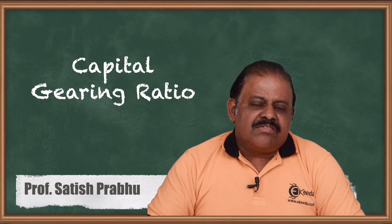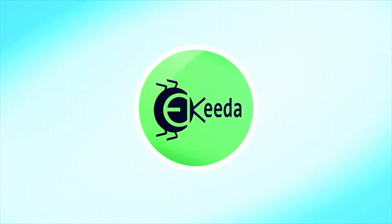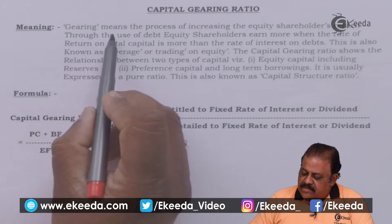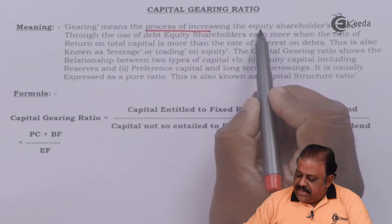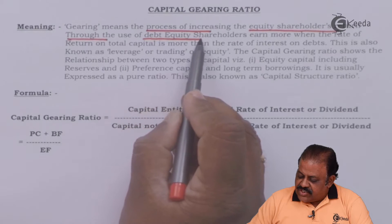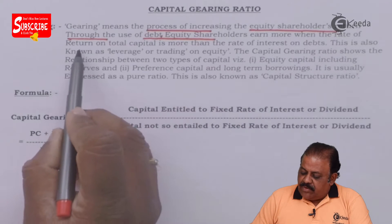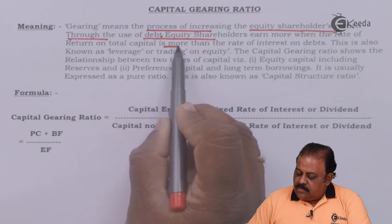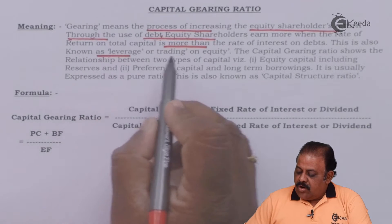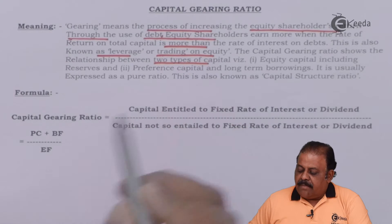Let us understand the concept of capital gearing ratio. Gearing means the process of increasing the equity shareholders' return through the use of debt, when the rate of return on total capital is more than the rate of interest on debts. This is also known as leverage or trading on equity.